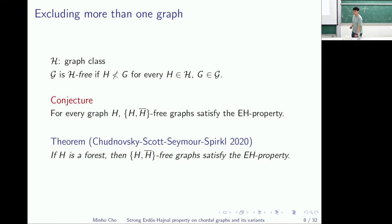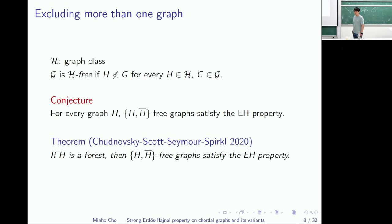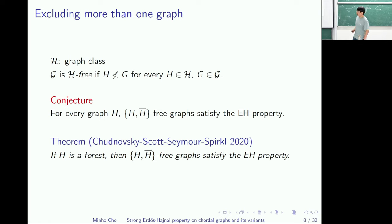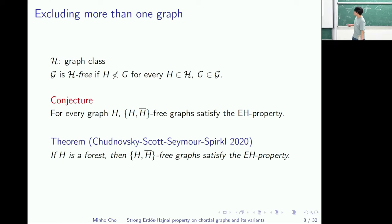This conjecture is weaker than the original one, but even this weaker conjecture remains open. To my best knowledge, this is almost all the result on forbidding a pair of graphs. So we dig more and start to forbid more and more graphs. So far I've introduced some results on this Erdős-Hajnal thing.